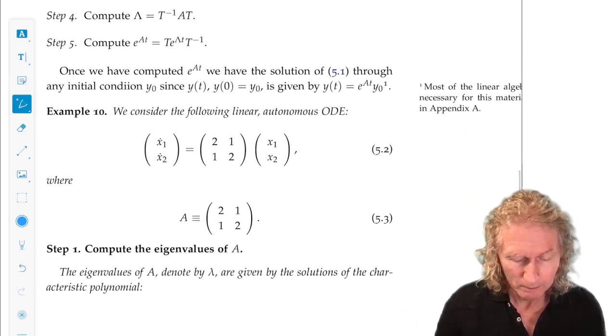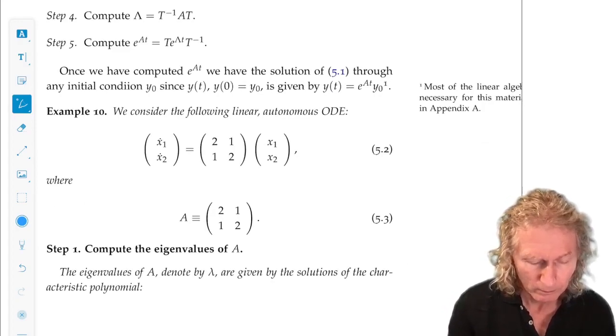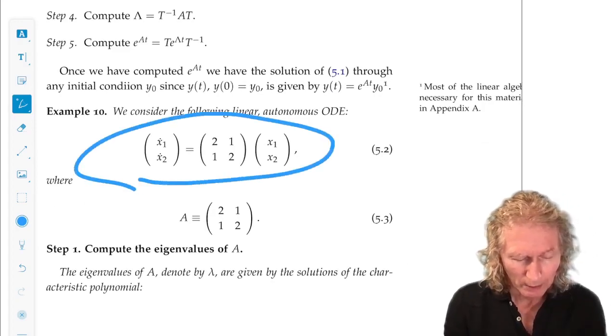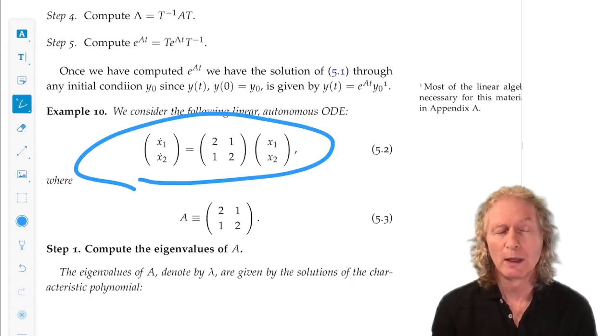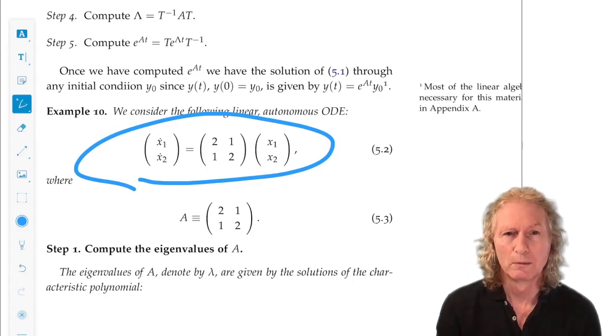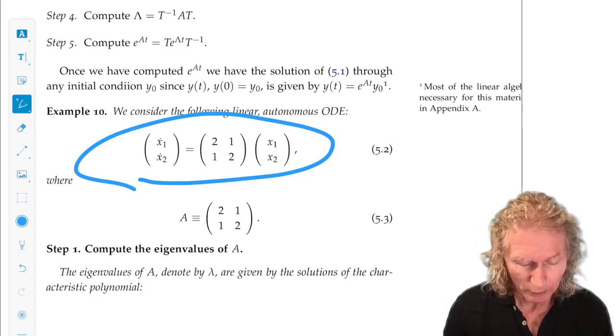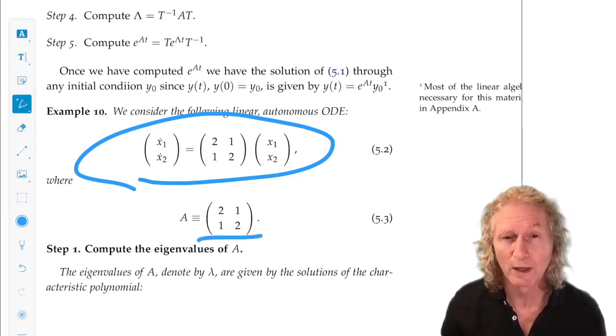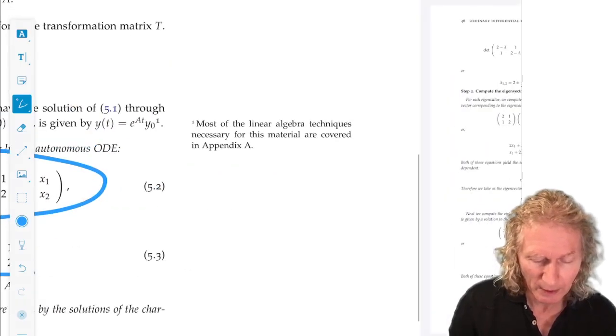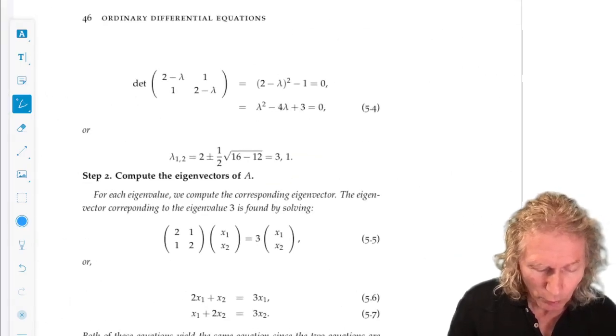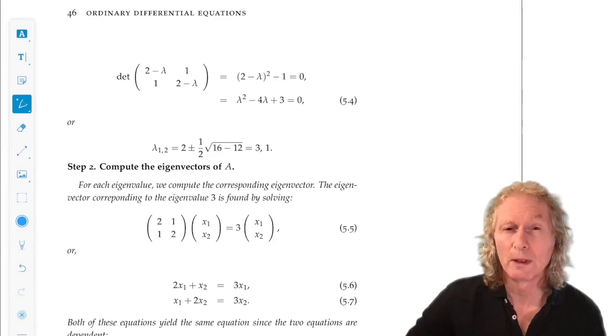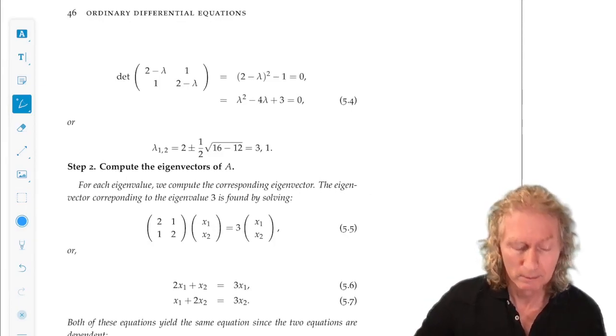So here's our first example. X1 dot, X2 dot is the matrix 2, 1, 1, 2. All right. So, that's what we focus on. That's A. We want to compute the eigenvalues. That's pretty standard. And we get two real eigenvalues, 3 and 1.